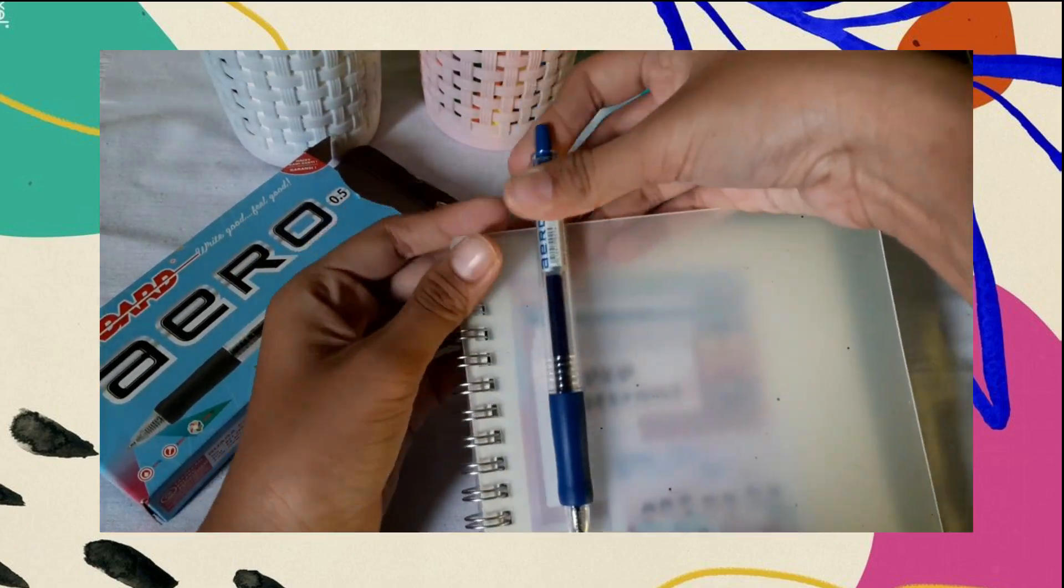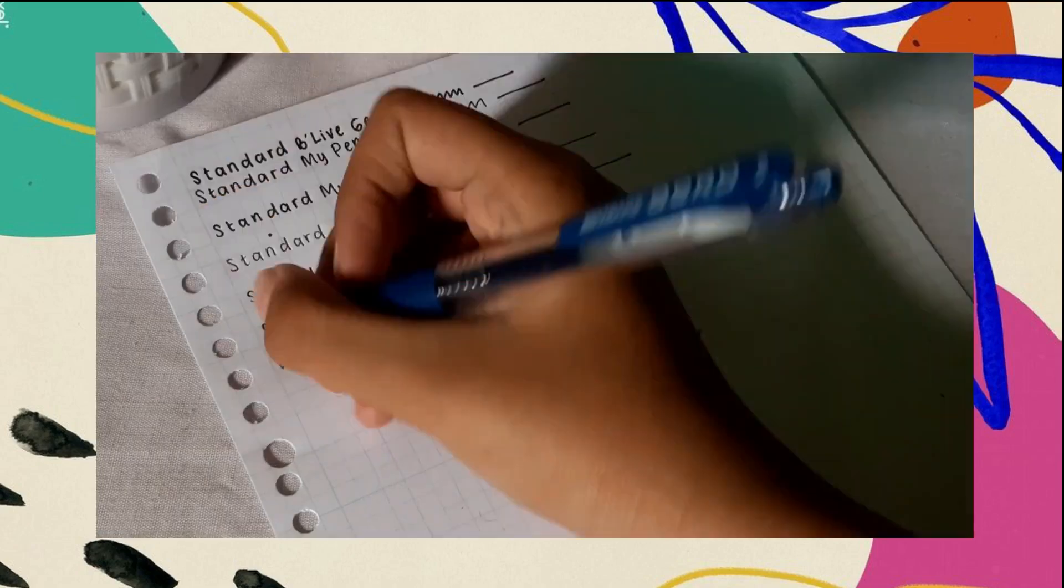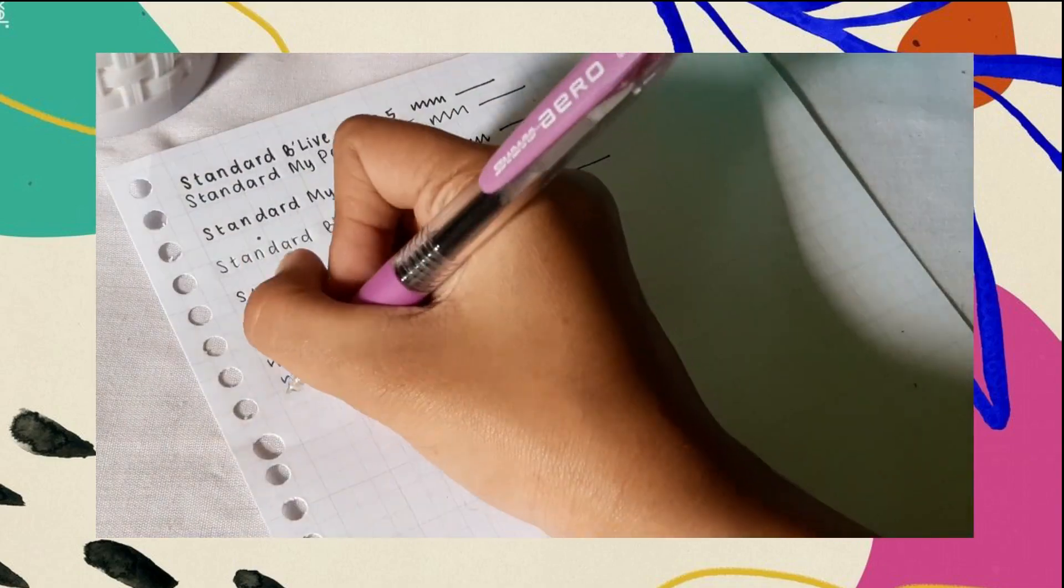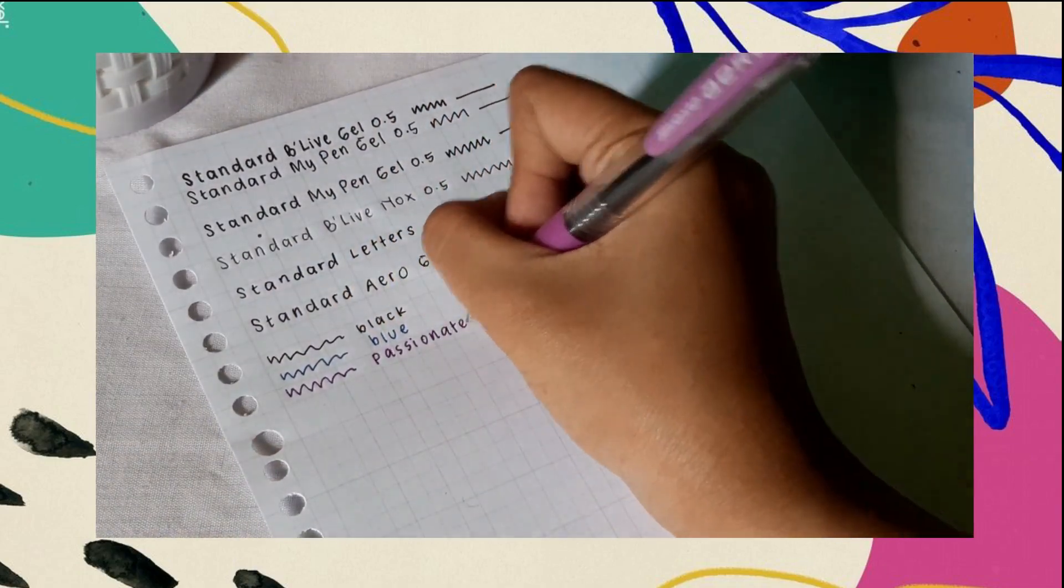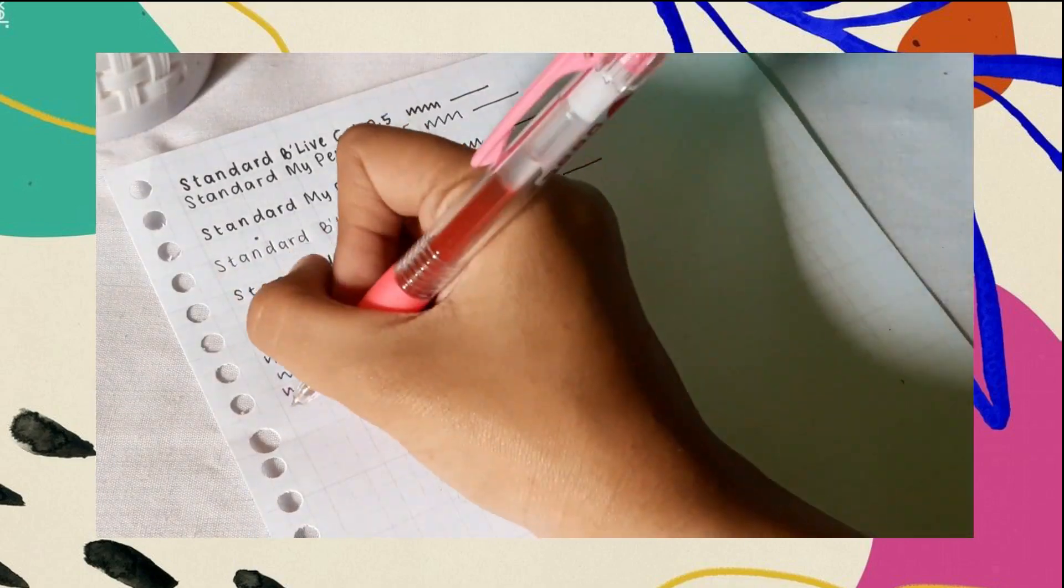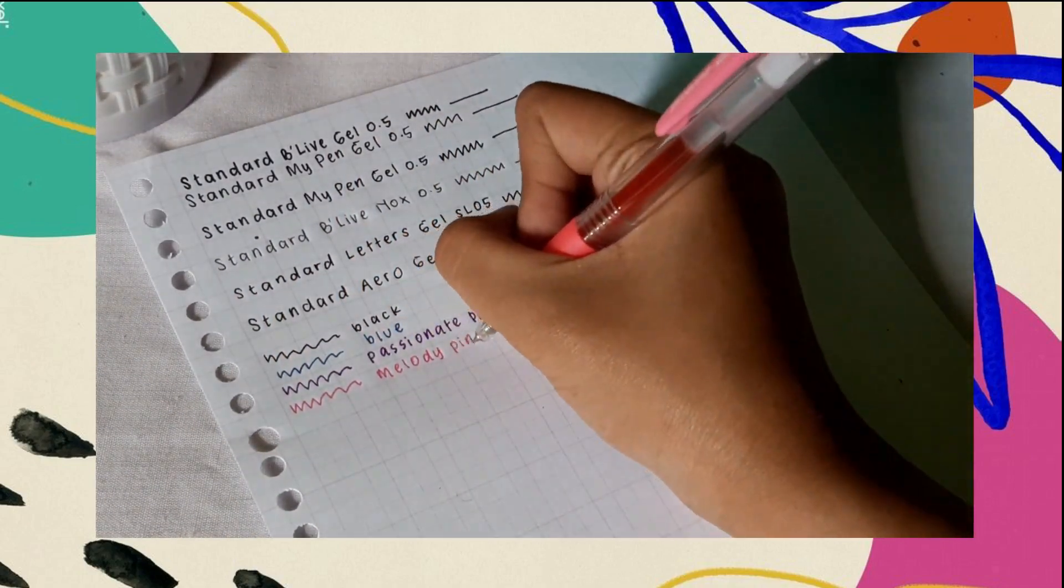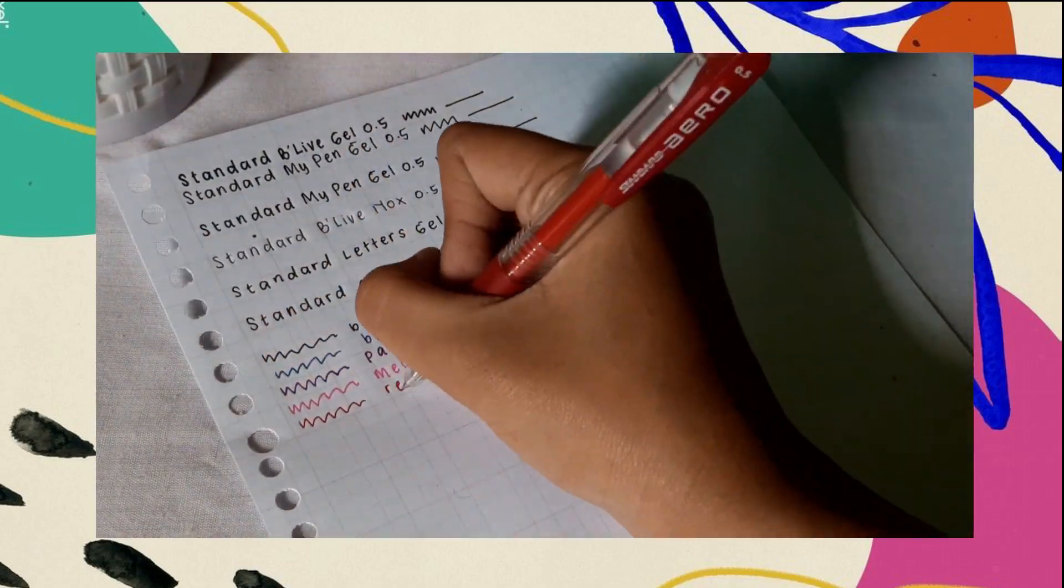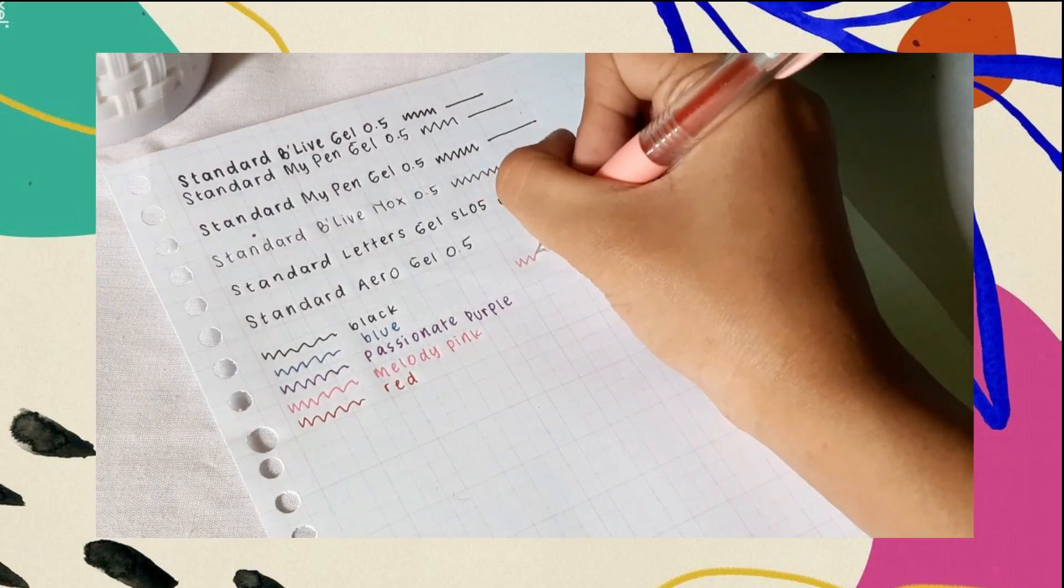Seperti yang aku bilang tadi, Aerogel ini punya 10 warna yang smooth banget. Dan tintanya tuh juga gak macet-macet gitu. Pokoknya bagus banget ya.